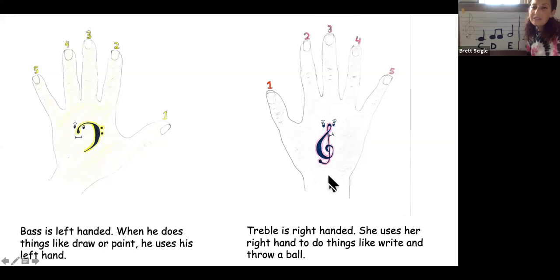Treble is right-handed. She uses her right hand to do things like write and throw a ball. Go ahead, put your right hand on top of treble and touch your thumb and touch your pointer and tap your middle finger and tap your ring finger and tap your pinky finger. Good job.